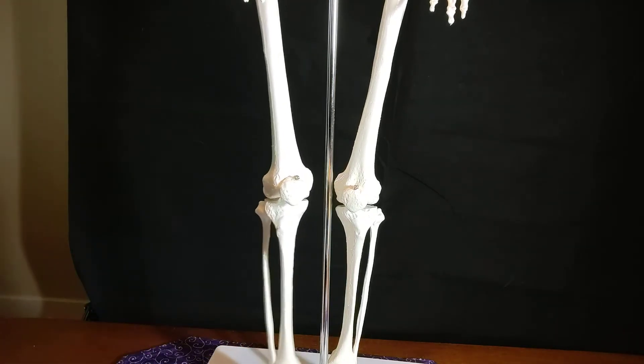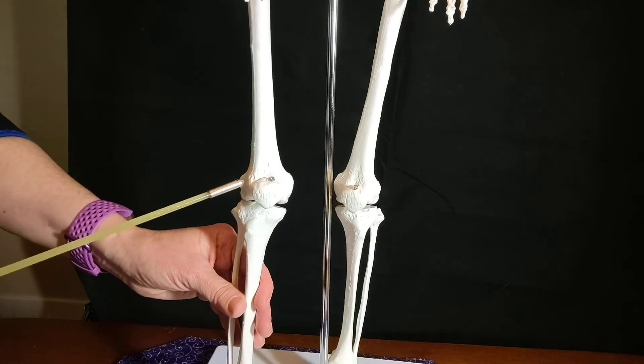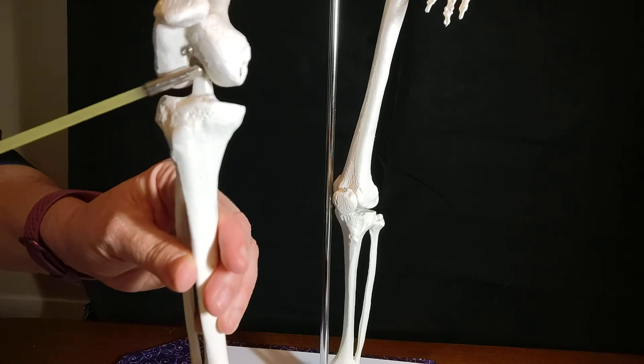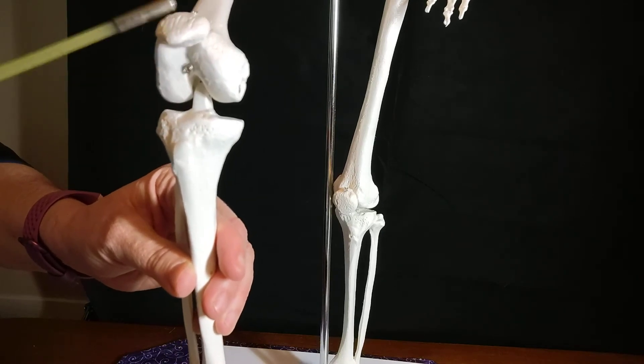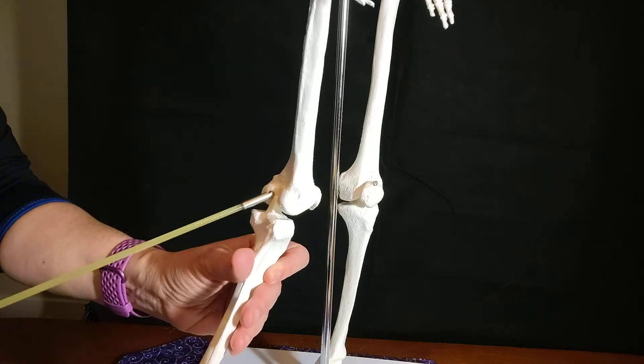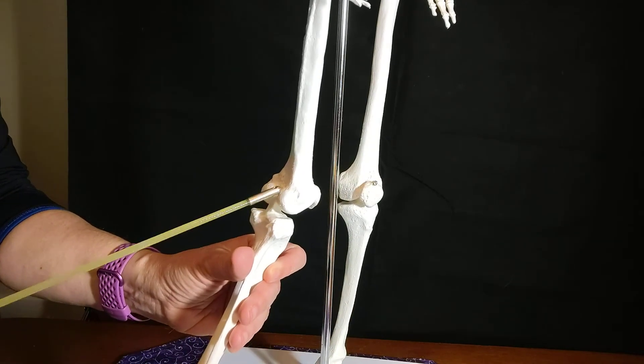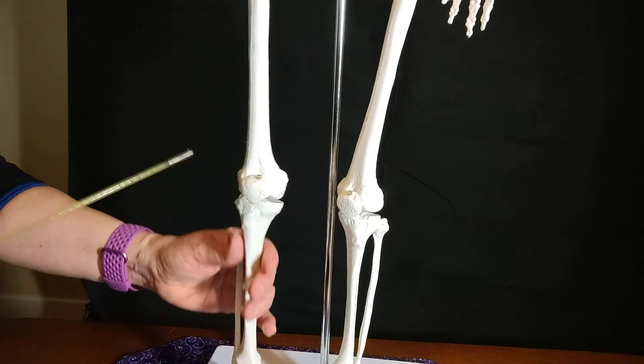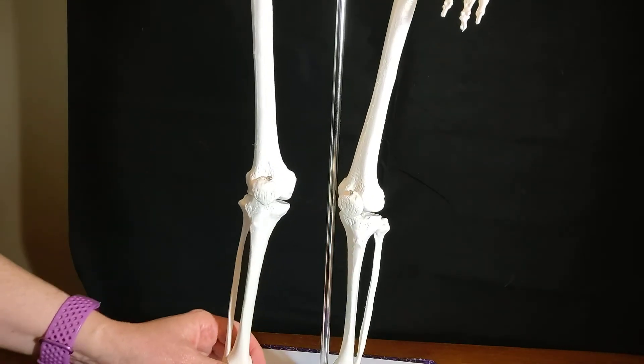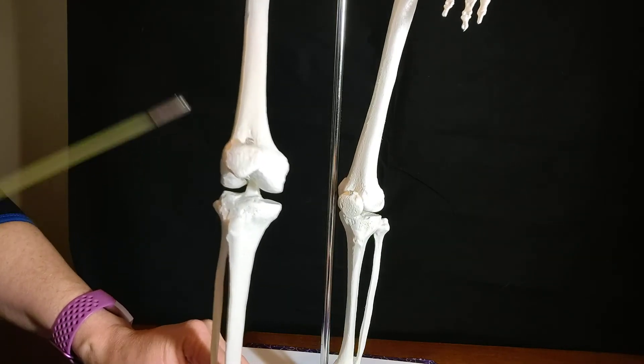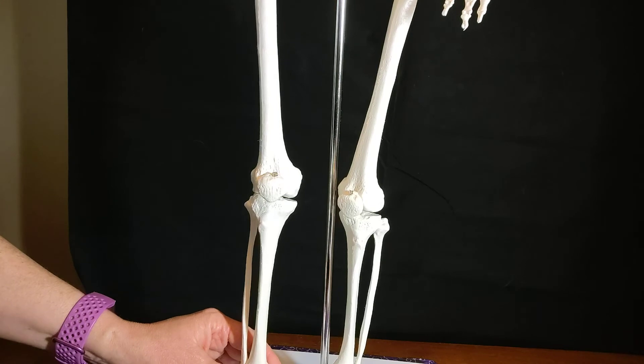So the patella sits in the intercondylar groove of the femur. You can see the groove right there and the patella sits right in that groove. Posteriorly, we have the intercondylar notch in between the two condyles. So it's a groove in the front and a notch in the back. Anterior is the groove where the patella sits. Posterior is the notch between the two condyles.